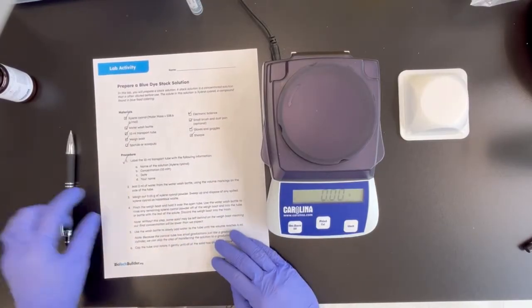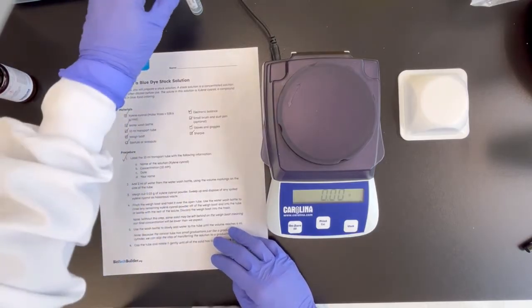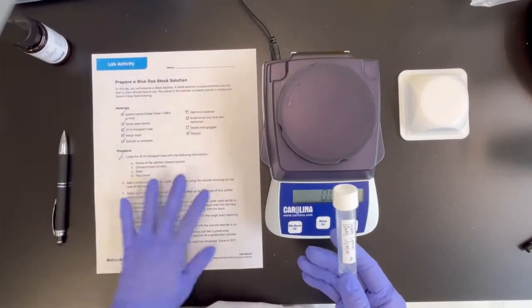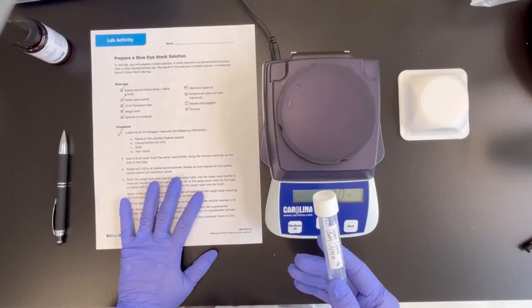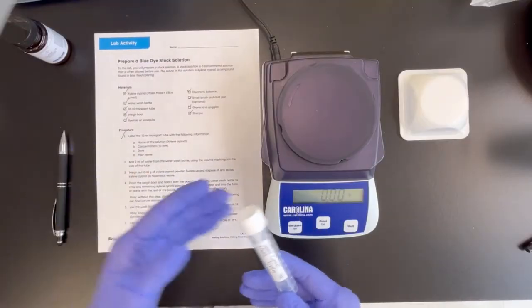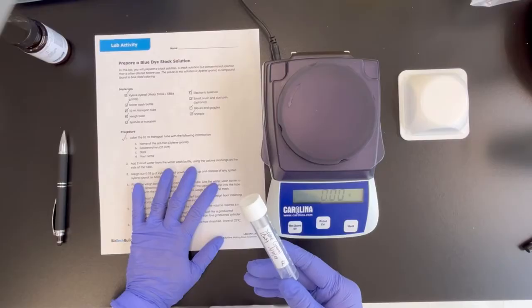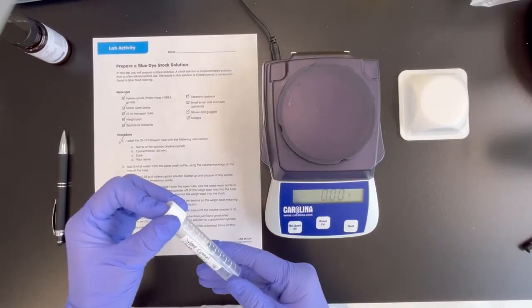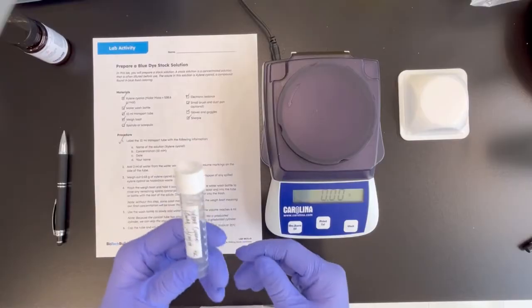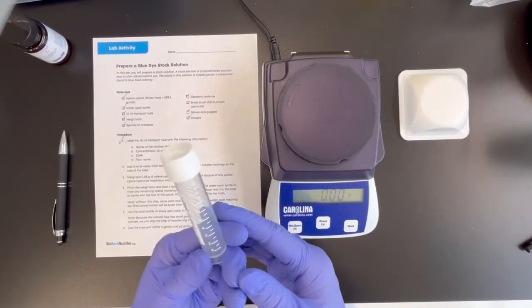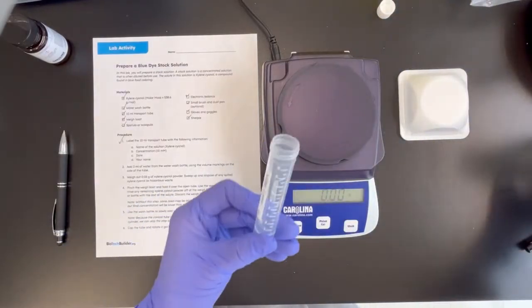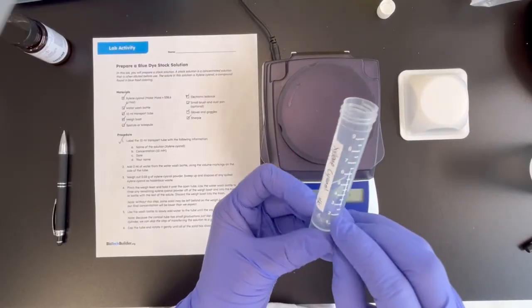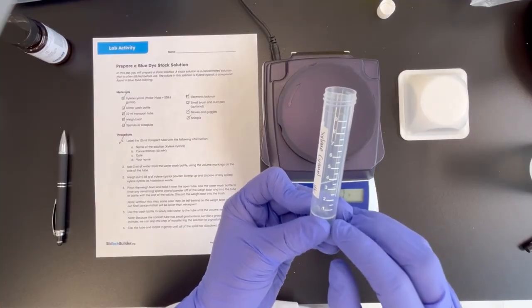Number two, add two milliliter water from the water wash bottle using the volume markings on the side of the tube. The thing about xylene cyanol is that it's a very dark pigment. And so normally, or in the videos that the students have watched, the students are being asked to make the solution in a beaker and then calculate and adjust the volume up to the desired volume using a graduated cylinder. However, for this one, we are thinking that it will stain all the equipment that you may have. And so we're going to directly have the students make the solution in this transport tube. So the idea is to add water up until the two milliliter line and that helps, and pre-adding the water in this case is going to help dissolve the xylene cyanol solution a little bit better.